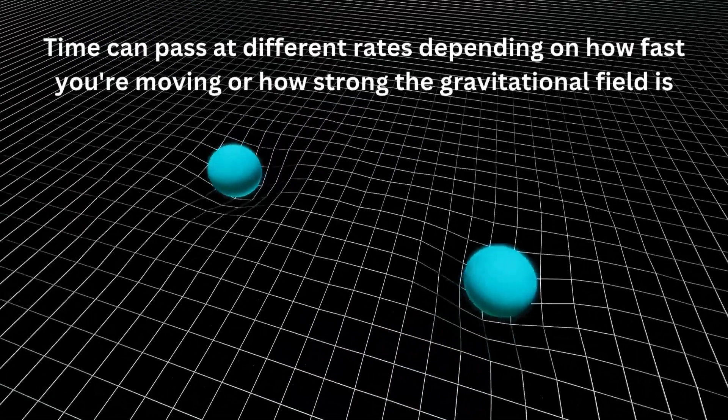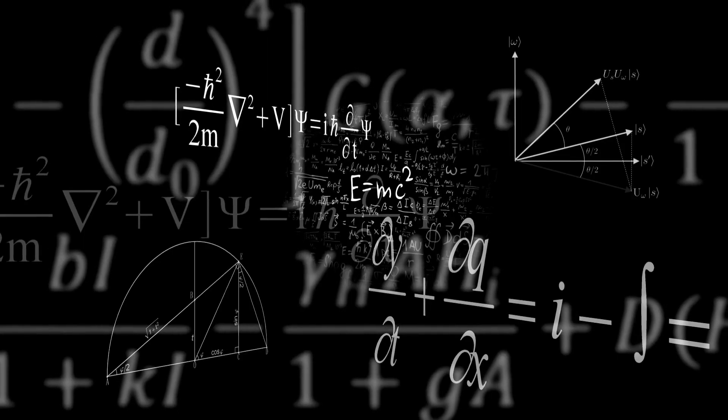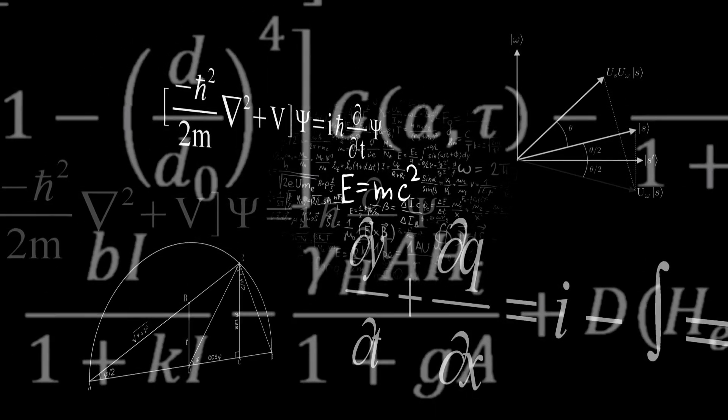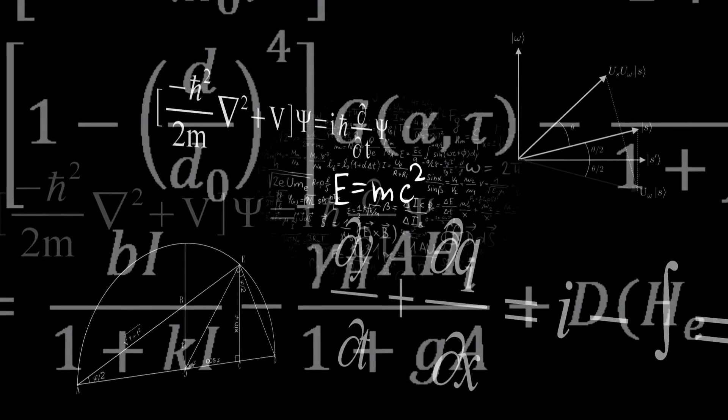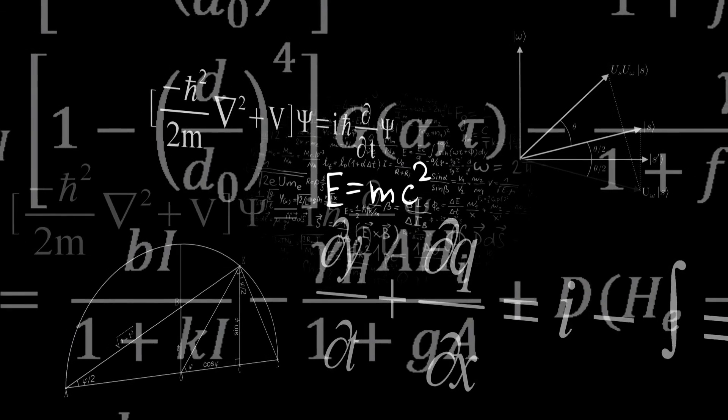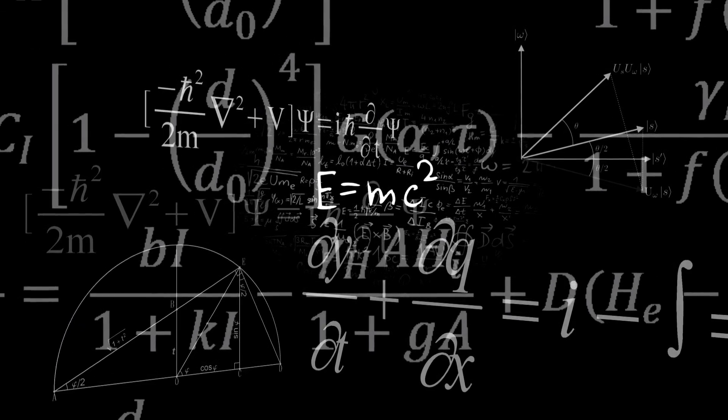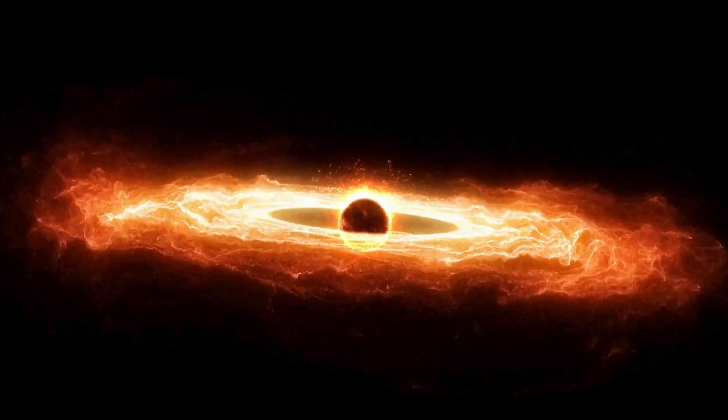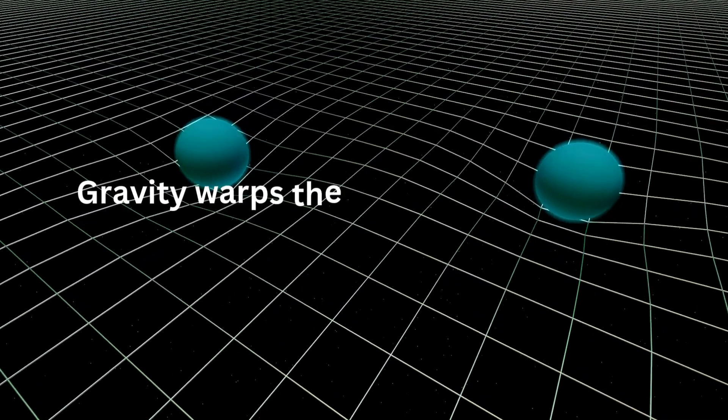To understand time dilation, we need to revisit Einstein's famous equation: E equals mc squared. This equation relates energy E to mass m and the speed of light c. Time dilation is influenced by two factors: gravity and speed. Let's consider each factor separately.